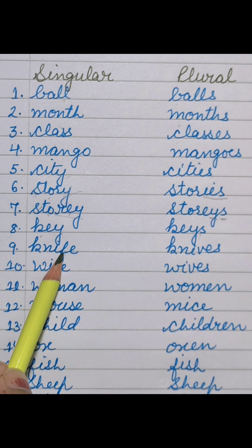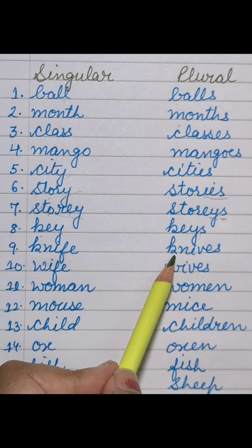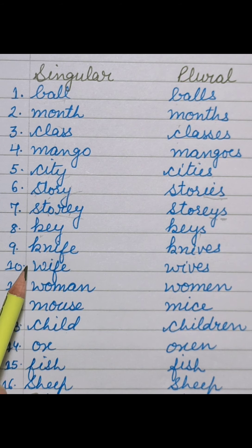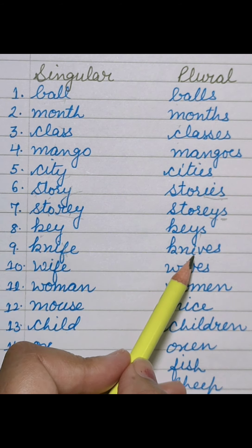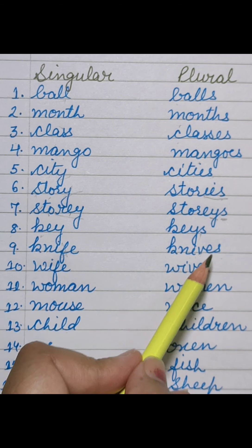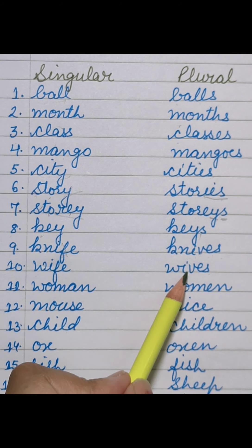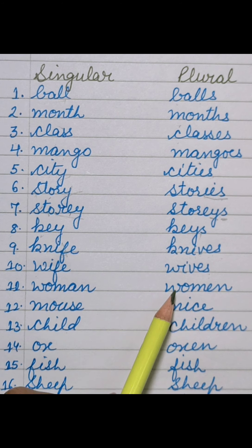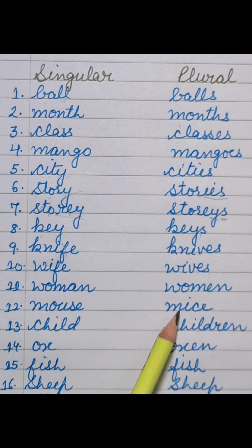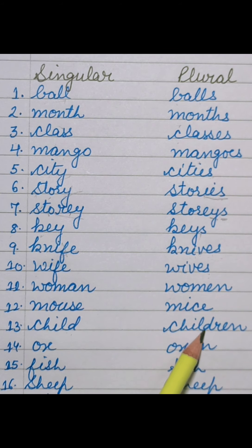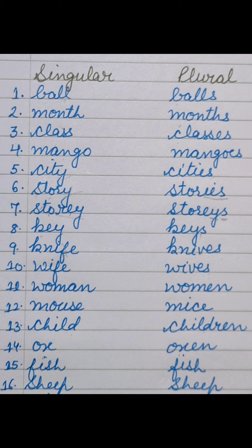Knife — singular, knives — plural. K-N-I-V-E-S. Remove F and attach VES. Wife — singular, wives — plural. W-I-V-E-S. Woman — singular, its plural is women. Mouse — singular, mice — plural. Child — singular, children — plural — more than one child is children. Ox — singular, oxen — plural. Fish — singular, fish — plural. It remains the same. Sheep — singular, sheep — plural. It also remains the same.